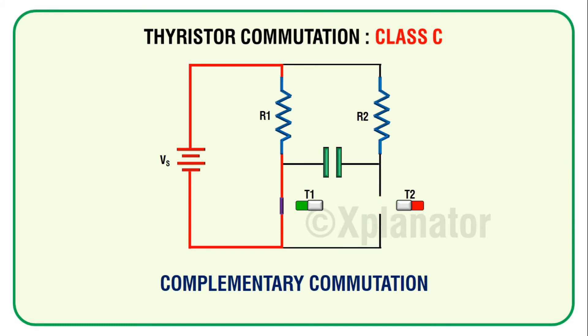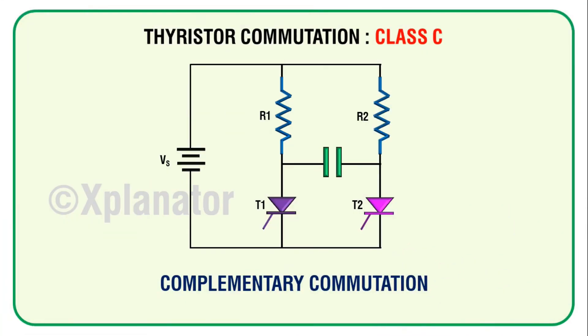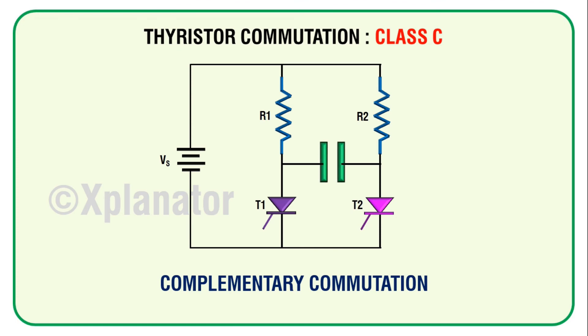The capacitor is discharged and the circuit returns to the same state as at the start. To summarize, the switching on of one thyristor commutates the second thyristor. For this reason, class C commutation is also known as complementary commutation. The source of energy is the capacitor, which is charged during the conduction period of the SCR that is to be commutated. The circuit turnoff time is decided by the time constant of the series RC network.